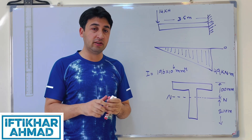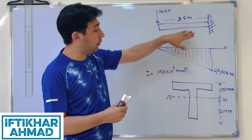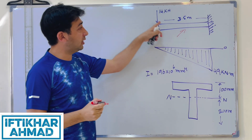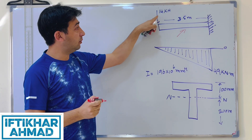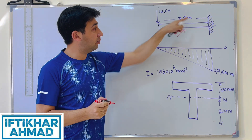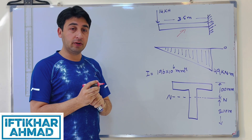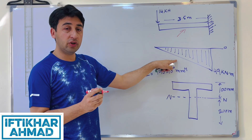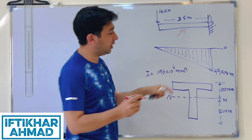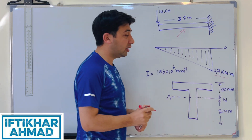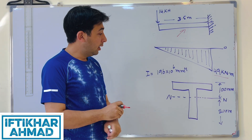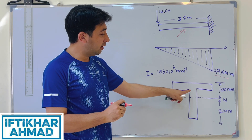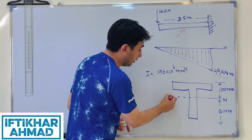You can see the link to that video in the description. In this video we have a cantilever beam with a tip load of 14 kilonewtons acting on it. The length of the beam is 3.5 meters. We have also drawn the bending moment diagram, and the maximum bending moment on this beam is 49 kilonewton meters.